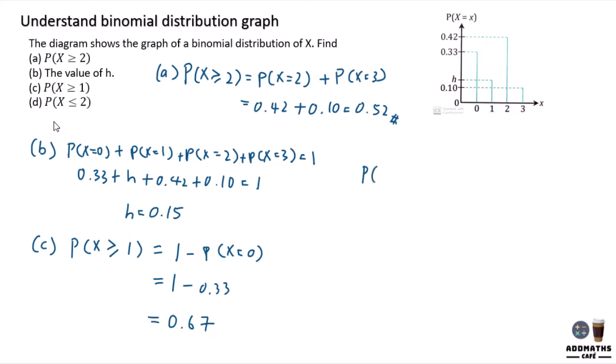you will get 0.67. So same goes to this, P(X ≤ 2), it means that 1, which is not including the 3. So 1 minus the 3, which is 0.1, leaving you 0.9 as the answer for part D.